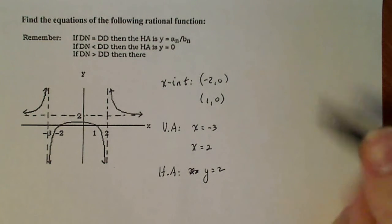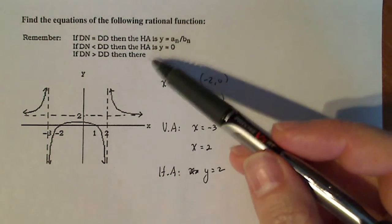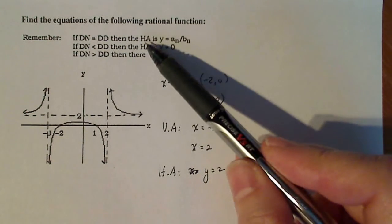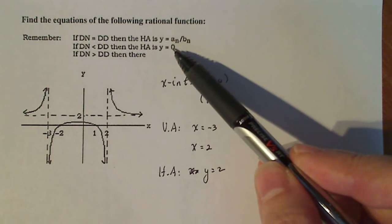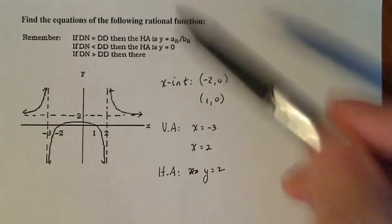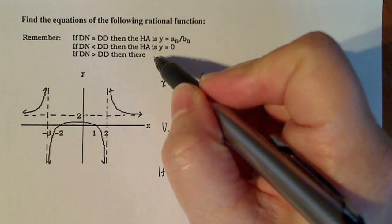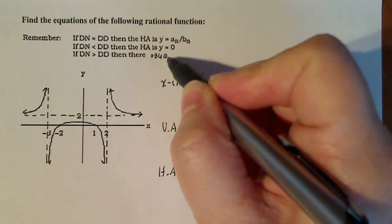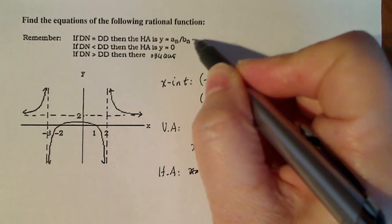When I look at this list up here, I notice my horizontal asymptote is not zero and it is not oblique, which is what this case is. So this is my case right here.